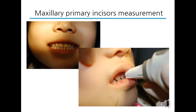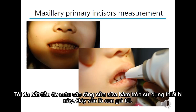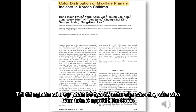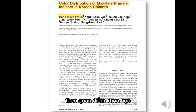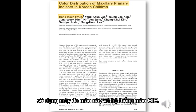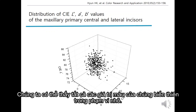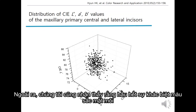So I started to measure maxillary primary incisors using this device. I investigated the distribution of color coordinates of Korean maxillary primary incisors from a scientific point of view using this colorimeter and the CIE color system. This graph shows the distribution of CIE values of four incisors, and we can see their colorimetric values fall within a small range.